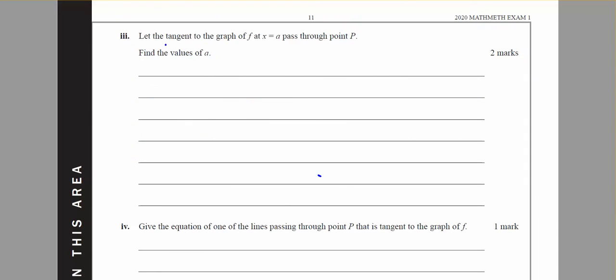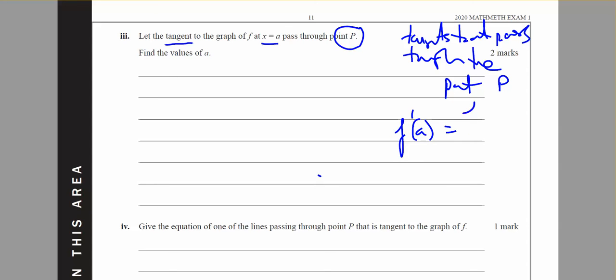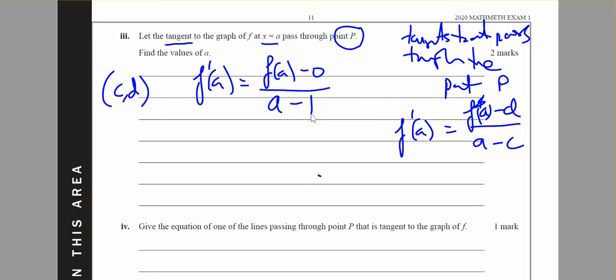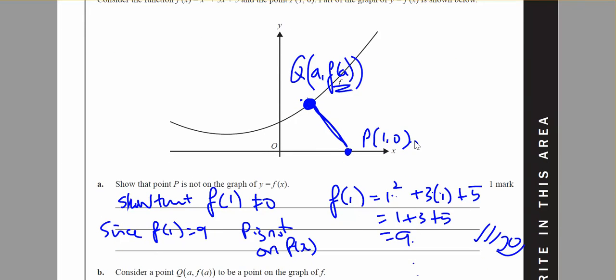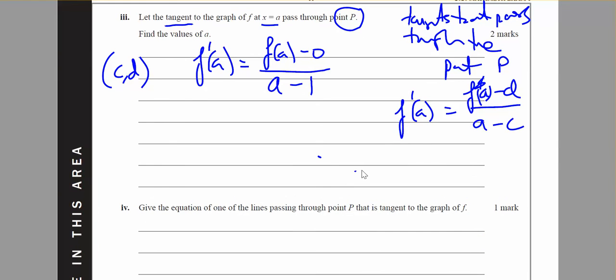Over the page. Find, let the tangent to the graph at x equals a pass through the point P. So this is an equation of tangents that pass through the point P. And I will have f dash of a equals f of a minus d over a minus c. If it goes through the point c, d. So I want f dash of a to equal f of a minus 0 over a minus 1. And that makes sense because I'm looking at my gradient triangle here and my rise is f of a but my run is a minus 1.